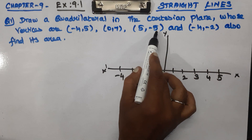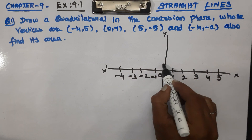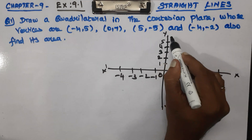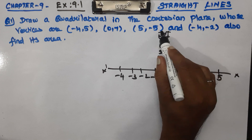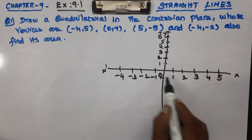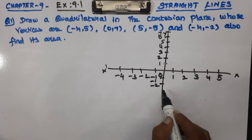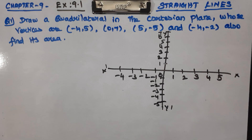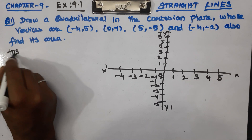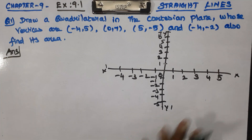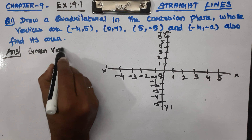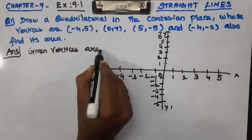So on the x-axis the points are 1, 2, 3, 4, 5, 6, and 7, and on the left side the lowest point is minus 5, minus 1, minus 2, minus 3, minus 4, minus 5. Now let's drop the points here. The given vertices are...